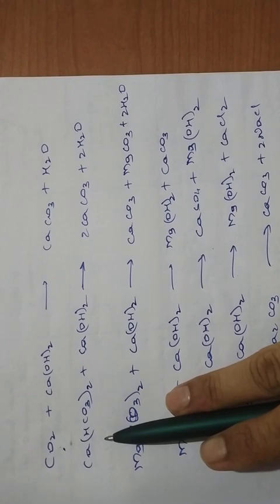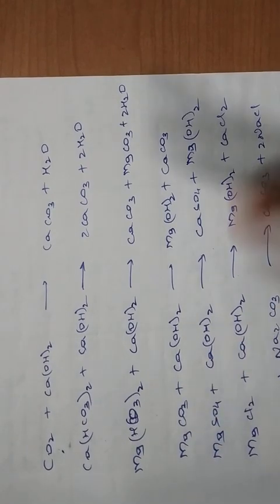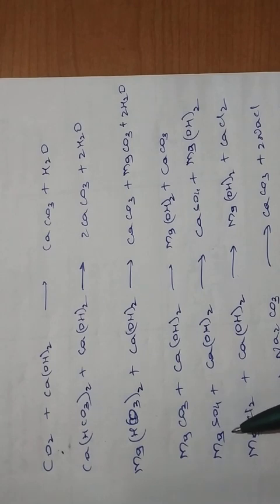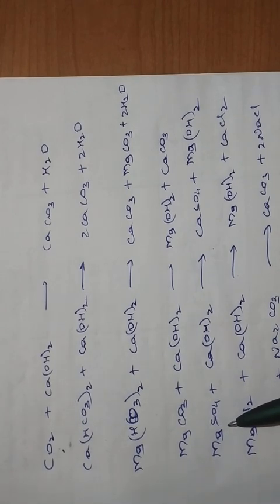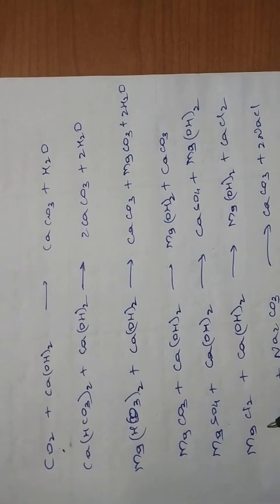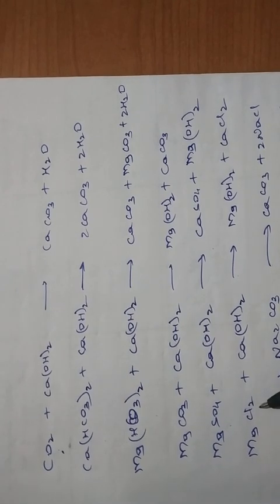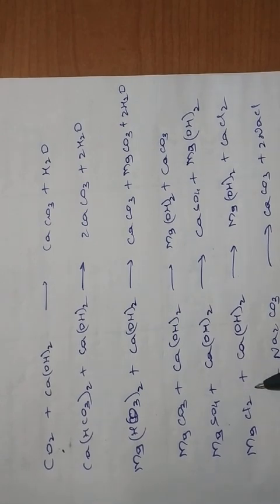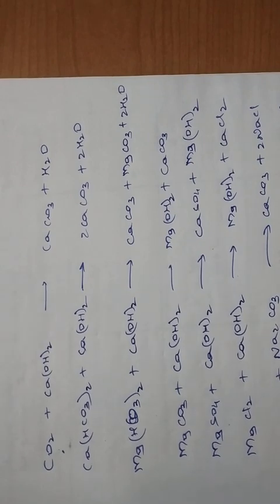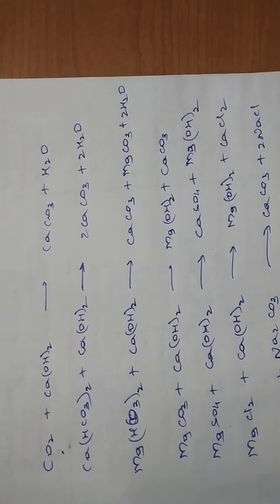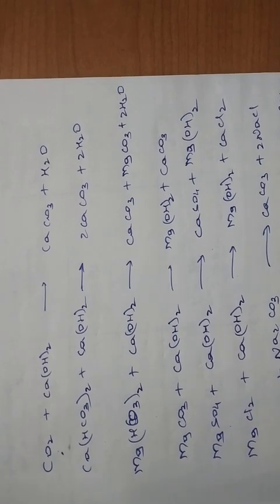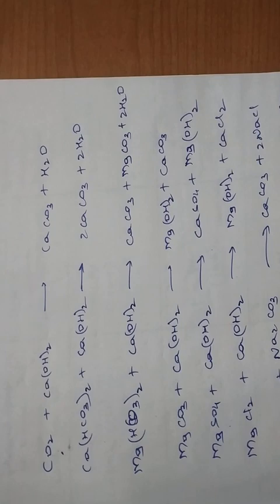Calcium bicarbonate and magnesium bicarbonate both impart temporary hardness. MgSO4 imparts permanent hardness, but this can be removed by both lime and soda ash. MgCl2 imparts permanent hardness and will also be removed by both lime and soda ash. CaCl2 imparts hardness and is removed using soda ash. Similarly, calcium sulphate imparts permanent hardness and is removed using soda ash.